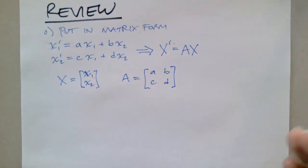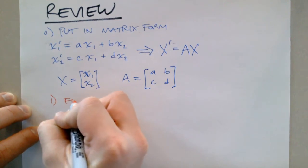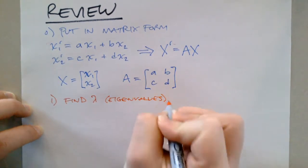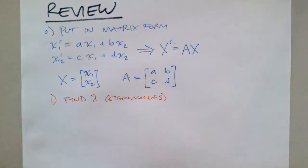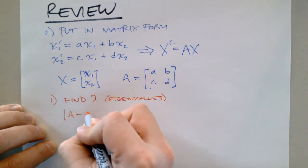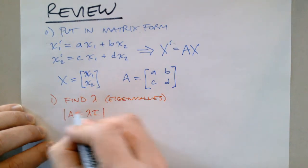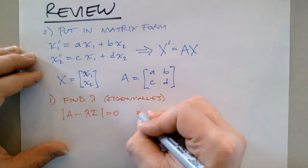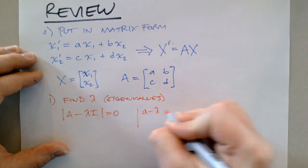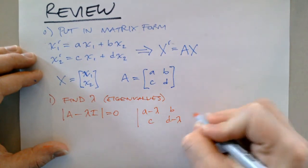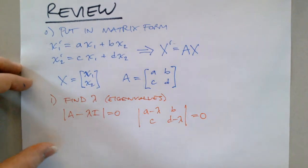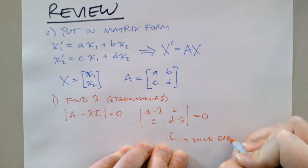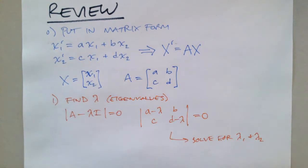Moving on to step one — finding the eigenvalues, those lambda values. We use the characteristic equation: the determinant of A minus lambda times the identity matrix equals zero. Written out, we have A minus lambda, B, C, and D minus lambda on the diagonal, and we take that determinant equal to zero, then solve for lambda one and lambda two in a two-dimensional system.